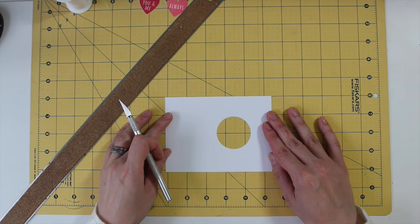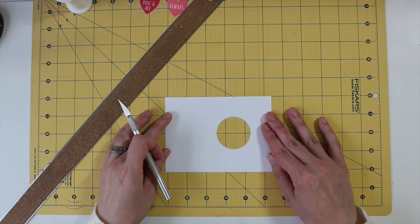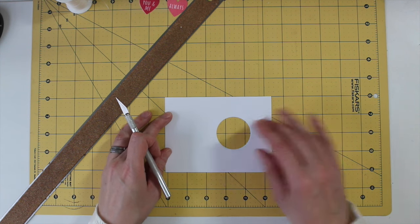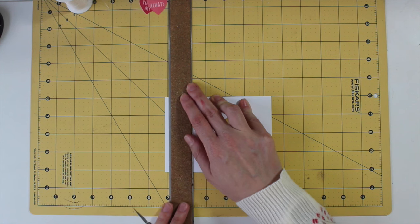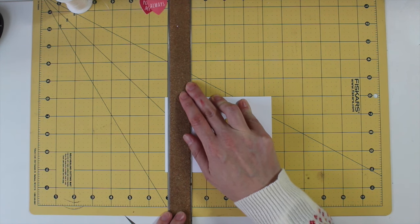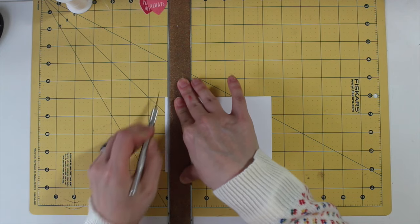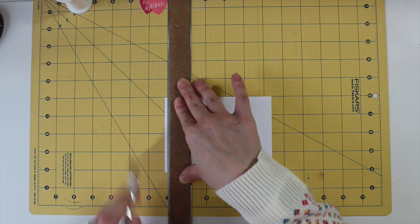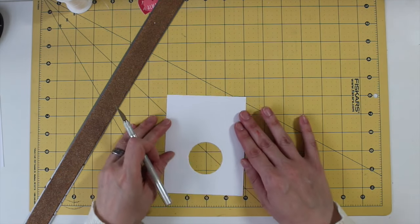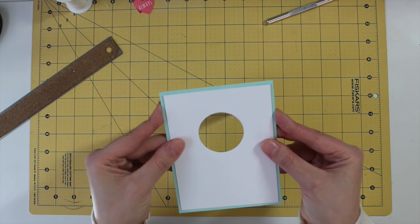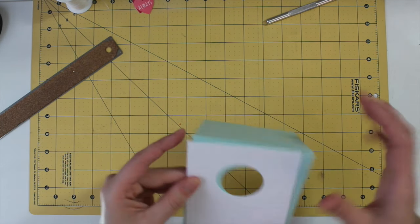One question I got a lot was how do you write a message on a card that has a window in it? And honestly, I either write below the opening, or I will write on a piece of decorative paper or pattern paper or something, and I'll just slip that inside the card so when they're displaying it there isn't writing visible.